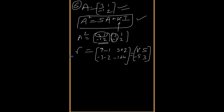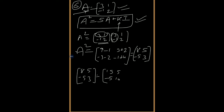Now we take this A² value and put it in the given equation. So [8, 5; -5, 3] = 5A + kI. Expanding 5A: 5 × [3, 1; -1, 2] = [15, 5; -5, 10]. Plus kI.